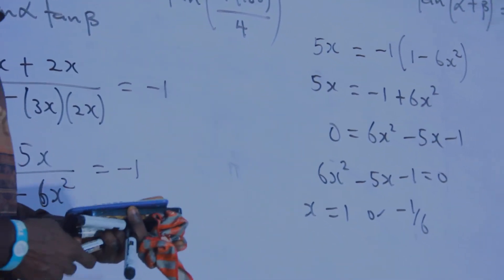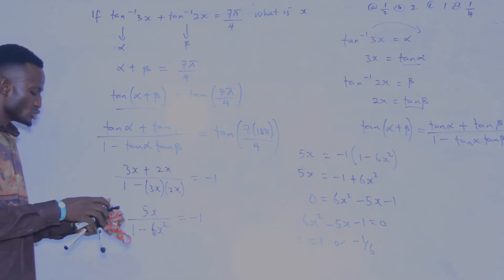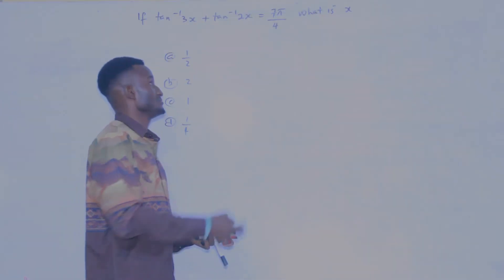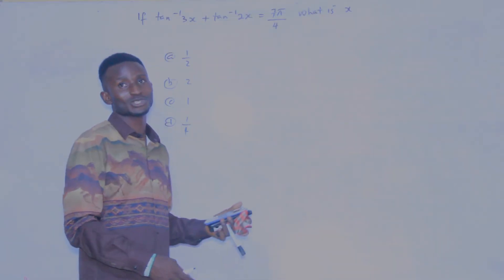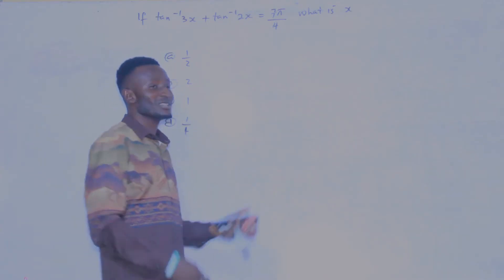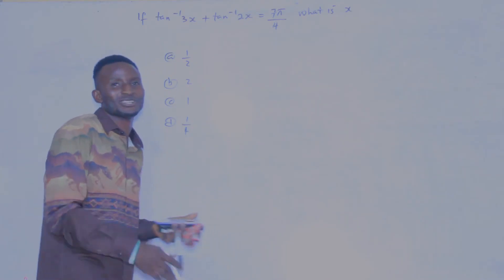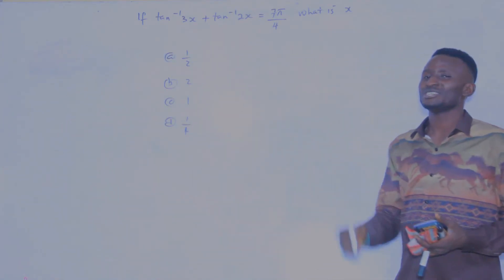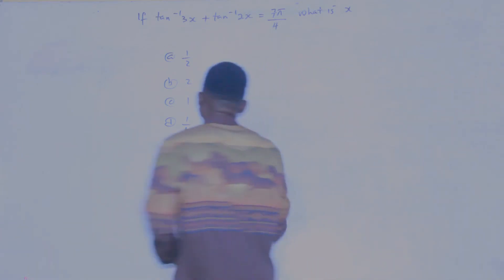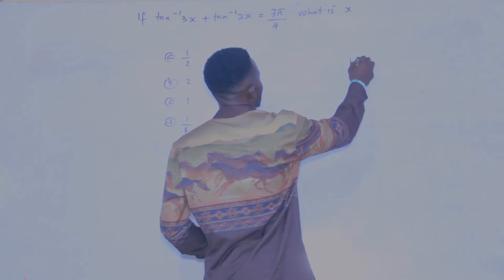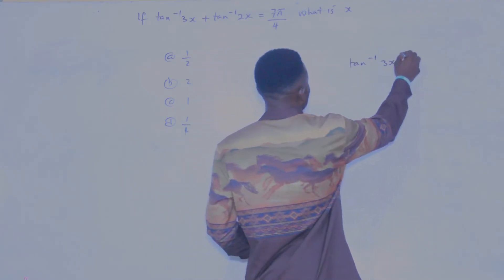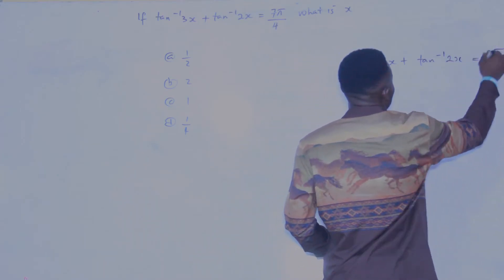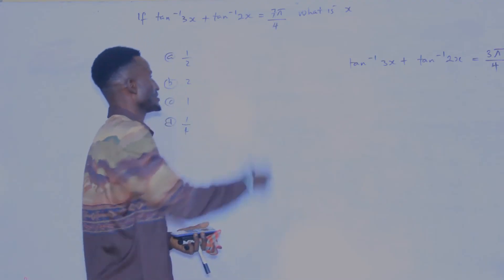Now we have x equals one or minus one over six. What about in the case of a CBT exam? Let us now do this on the calculator. Now you will be surprised — many of you will ask why we're using the calculator method. Let me tell you: if you use software X on this question it won't work for all cases. I'm going to give you one exercise: go and do tan inverse of 3x plus tan inverse of 2x equals 3π over 4.